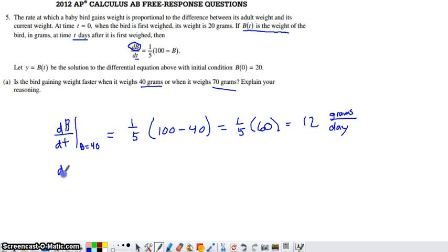We also want to figure out what dB/dt is at the B value of 70, when the bird weighs 70 grams.